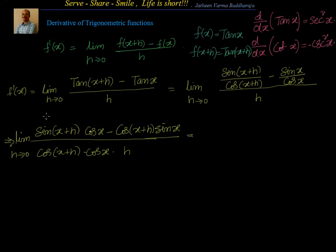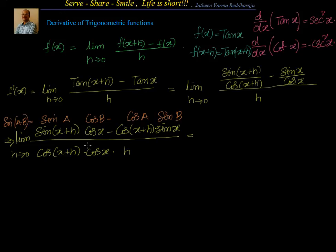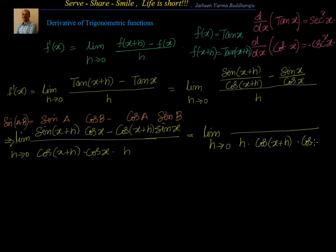Now we can see the numerator is in the form of sin(a)cos(b) - cos(a)sin(b), which equals sin(a - b). We know sin(a-b) = sin(a)cos(b) - cos(a)sin(b). So substituting, where a = x+h and b = x, the x's cancel and we get sin(h) in the numerator.